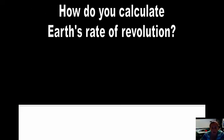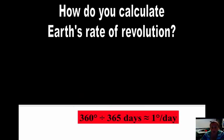How do we calculate Earth's rate of revolution? Again, Earth is going to revolve around the sun 360 degrees, and it takes 365 days, which if you divide that out, it works out to be about one degree per day that Earth revolves around the sun.